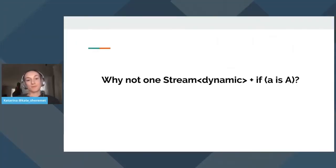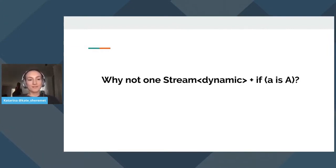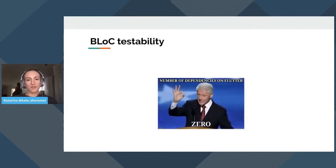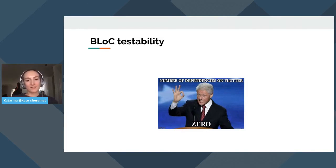Why not just use one dynamically typed stream? Dynamic means any type. This is a viable approach with different pros and cons. The pro is we don't need to dispose of a lot of sink-stream pairs. The cons are losing the benefits of a statically typed language, making it easy to forget to handle a specific case or handle a type that is no longer present — and it feels like implementing a type system. BLoC is easy to test: no dependency on Flutter, no need to run an emulator, making it easy and fast to test on CI. You just need to swap the models with mock implementations, and Dart's testing framework has rich support for async tests including streams.